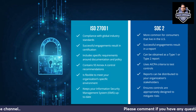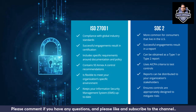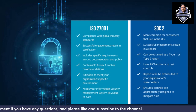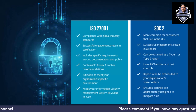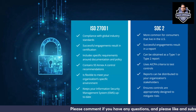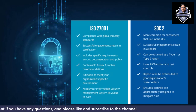ISO 27001 compliance with global industry standards results in certification — you get an ISO 27001 certificate when audited. It includes specific requirements around documentation and policy, contains 93 Annex A control recommendations, is flexible to meet your organization's specific environment, and keeps your Information Security Management System up to date.